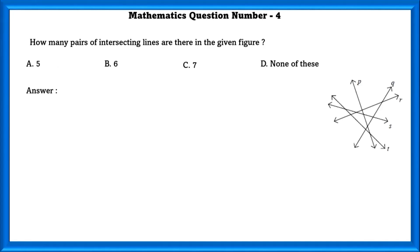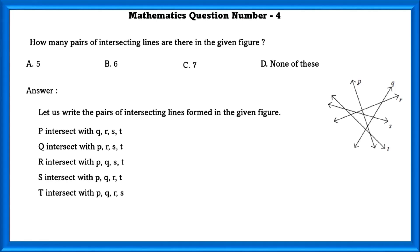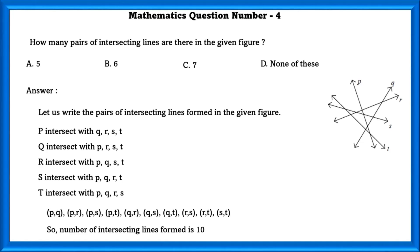Mathematics question number 4. How many pairs of intersecting lines are there in the given figure? Let us write the pairs of intersecting lines. P intersects with Q, R, S, and T. Similarly, Q, R, and S, T intersect with other lines. So, the total number of intersecting pairs formed is 10. Since there is no option for 10, the answer is none of these.